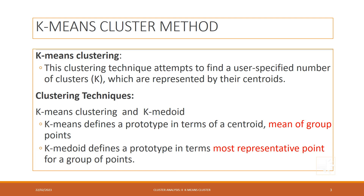Here, we will discuss the K-Mean Cluster Method. This clustering technique attempts to find a user-specified number of clusters, that is the K, which are represented by their centroid. There are two types of clustering techniques: K-Mean Clustering and K-Median Clustering. The K-Mean method defines a prototype in terms of a centroid, that is, the mean of a group of points. Whereas K-Median defines a prototype as the most representative point for a group of points — that is, the mode of a group of points.